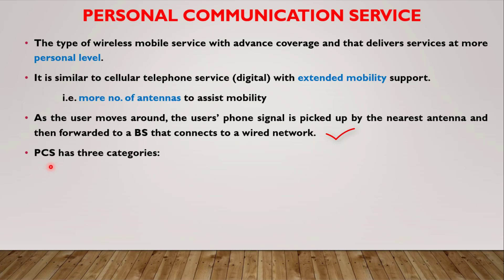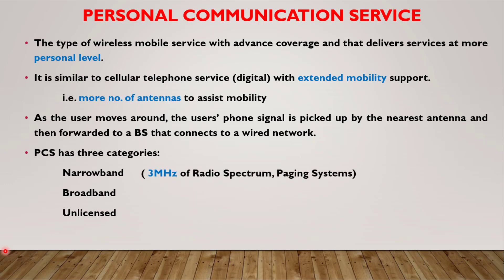This personal communication service has three categories: the first is narrow band, after that we have broadband, and we have the unlicensed category. In narrow band, we have a very narrow band of radio frequency — approximately 3 megahertz of radio spectrum — and this is used for transmission of messages, voice messages, or other messages like numeric or alphanumeric messages, for example our paging system.